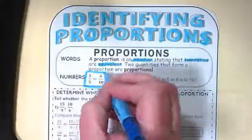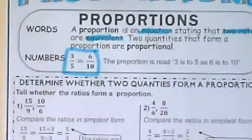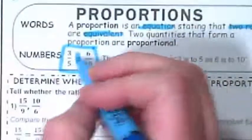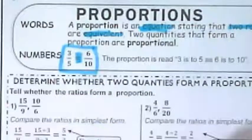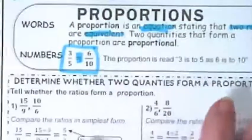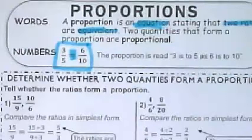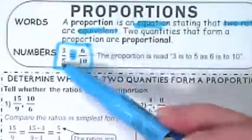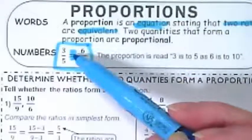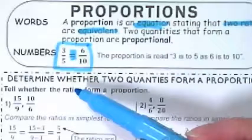This is what a proportion looks like. It looks like two fractions or ratios equal to each other. This equal sign is here because it is an equation. This proportion is read 3 is to 5 as 6 is to 10. So 3 is to 5 as 6 is to 10 instead of 3 fifths is equal to 6 tenths.